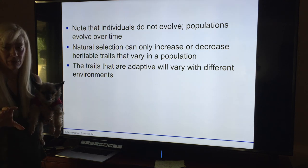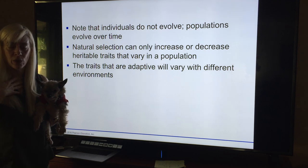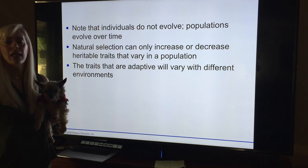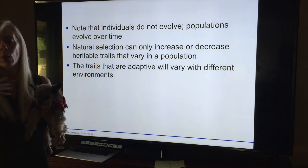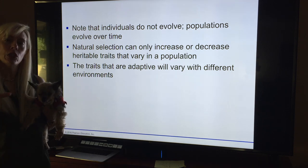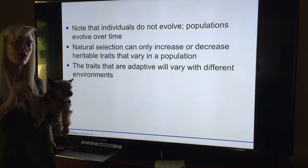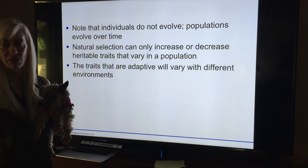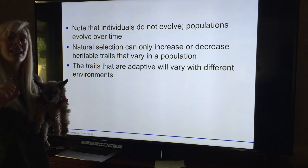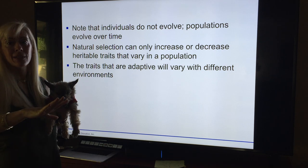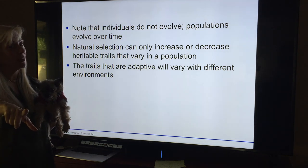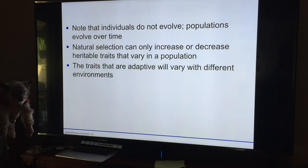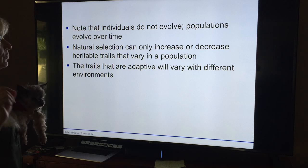If an environment changes, natural selection may result in adaptations to these new conditions and may give rise to a new species — but they have to have time to change with the environment. Here's a big thing: individuals do not evolve. We do not change from the DNA that we have throughout our entire lives. Populations change — that's what's important in this theory. Populations evolve, meaning the genetic makeup of a population changes over time.